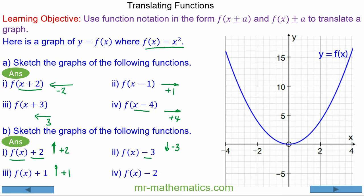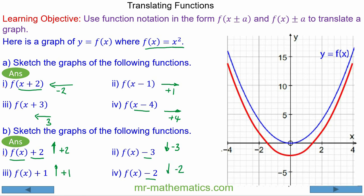For the last question, we're going to perform a vertical translation down 2 units, so you can see the turning point is now at x equals 0 and y equals negative 2.